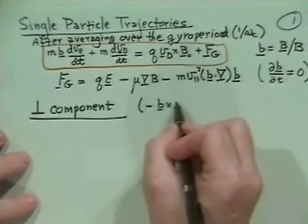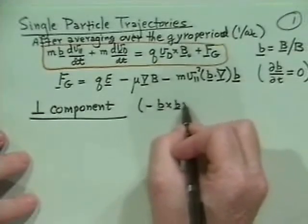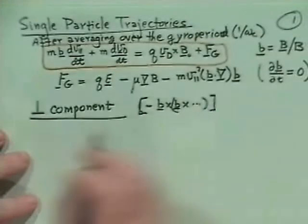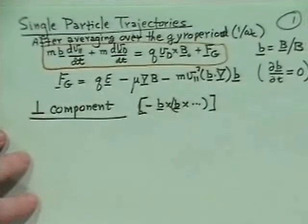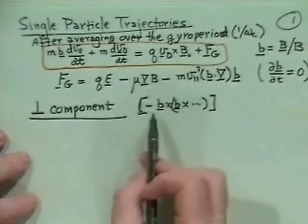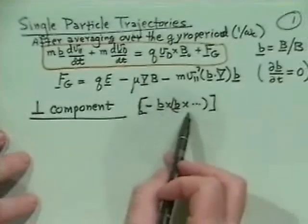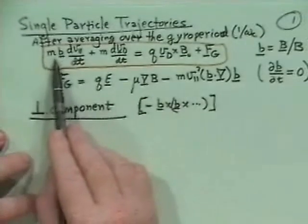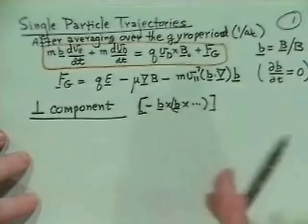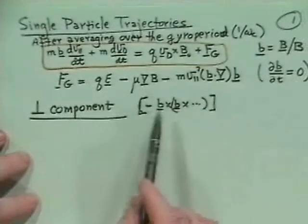To get the perpendicular component, we take b cross b cross whatever we want the perpendicular component of — we take b × (b × ...), and that picks out, with a minus sign, the perpendicular component. If we do this operation on the equation, the first term clearly cancels: we get a b × b, and that will vanish since they're in the same direction.